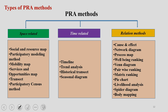Now, types of PRA methods. There are three types: space-related, time-related, and relational methods. In case of space-related methods, we generally generate social resource maps, participatory modeling, mobility maps, services and opportunities maps, transit maps, and participatory census methods.